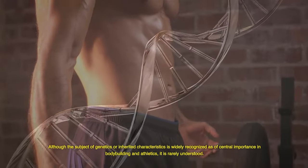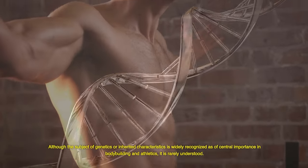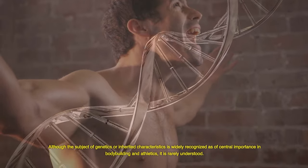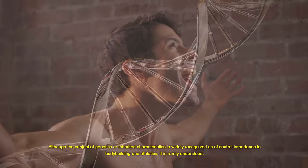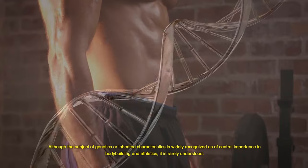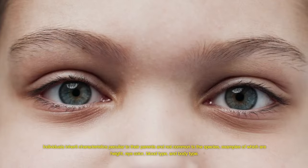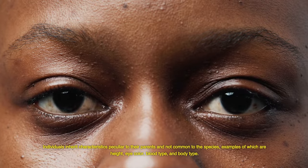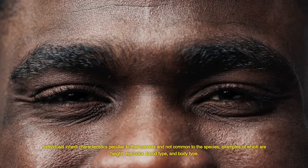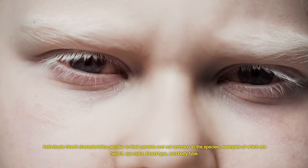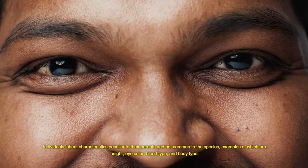Although the subject of genetics, or inherited characteristics, is widely recognized as of central importance in bodybuilding and athletics, it is rarely understood. Individuals inherit characteristics peculiar to their parents and not common to the species, examples of which are height, eye color, blood type, and body type.